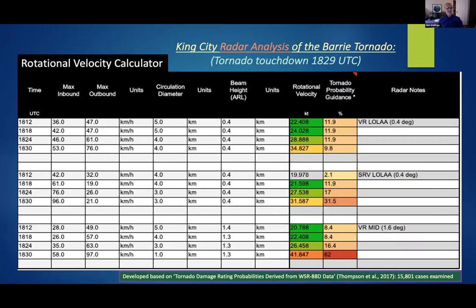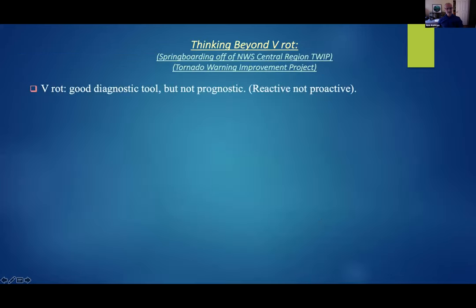This is a VROT calculator spreadsheet based on the Thompson et al. 2017 paper — an editable Excel spreadsheet where you input your maximum inbound/outbound velocities, circulation diameter, and beam height. You can input plain velocity scans or storm-relative velocity, or tilt higher to get a sense of what's happening. Based on a large sample size, it outputs the probability of a tornado. You can see how the tightening couplet ramped up the tornado probability right at tornado touchdown time. VROT is reactive, not proactive, so we'll look at three other options today using S-band radar.